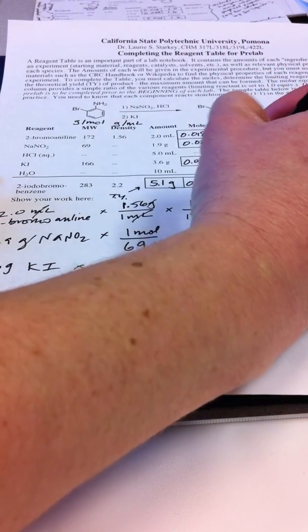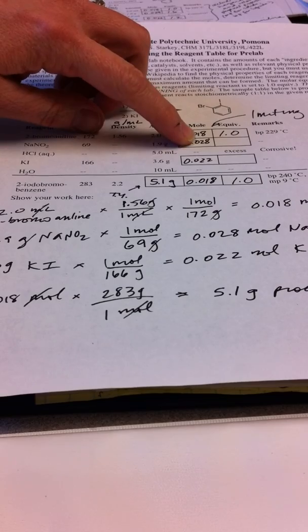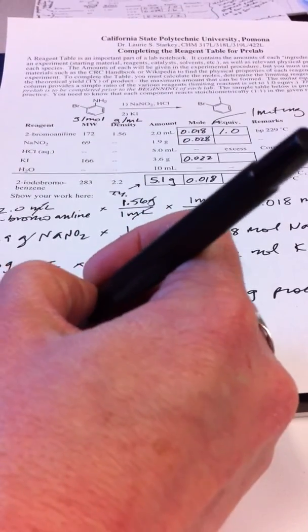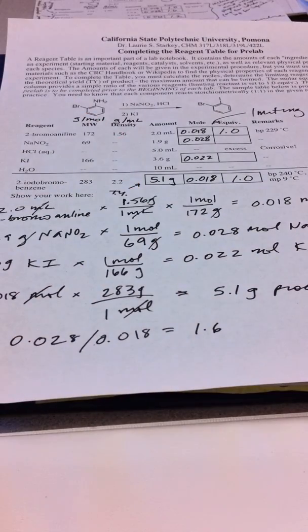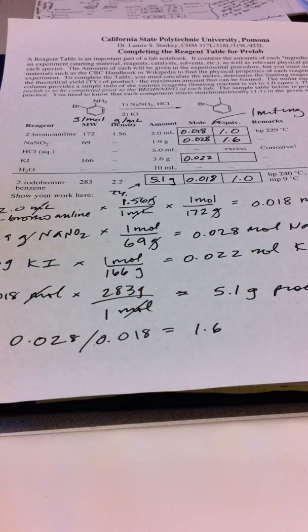That means we can form exactly 1.0 equivalent of our product as our theoretical yield. And then how much do we have of these others? We have an excess but how much of an excess? So what we do is we simply divide all of these numbers by 0.018 is what we've done. So we divide 0.028 divided by 0.018 and we come up to 1.6. Make sure you're always going to the tenths place here so that we can get a fairly precise number. So we get 1.6 equivalents of NaNO2. So that means we're using 60% more. We're not using twice as much of this reagent, not 10 times as much. We're using 60% more.